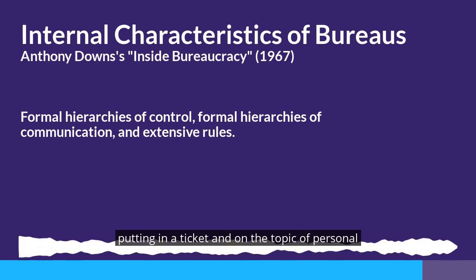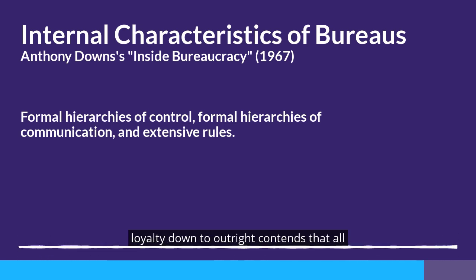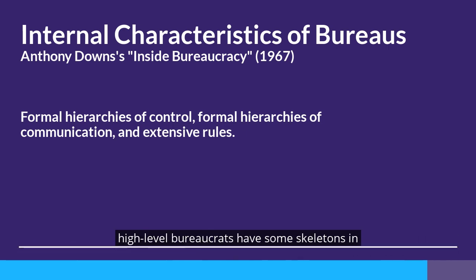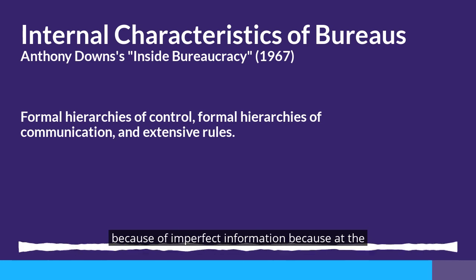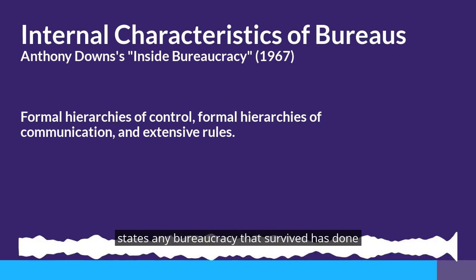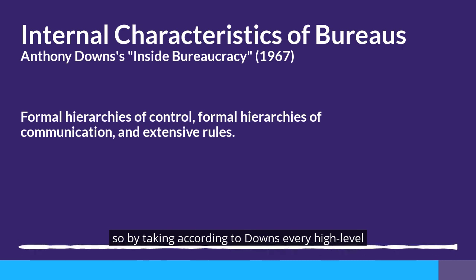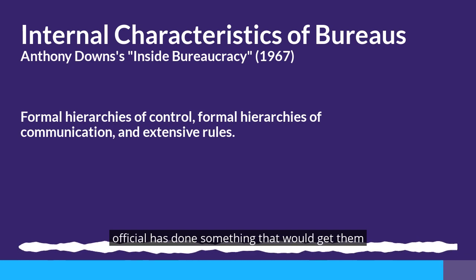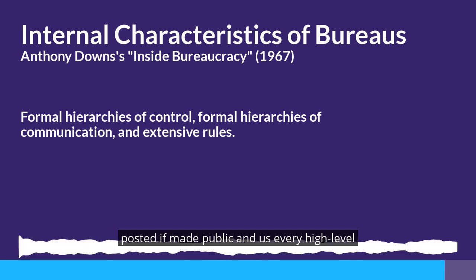On the topic of personal loyalty, Downs outright contends that all high-level bureaucrats have some skeletons in the closet — because of imperfect control of subordinates, because of imperfect information, and because, as he states, any bureaucracy that survives has done so by taking shortcuts to increase efficiency or effectiveness. According to Downs, every high-level official has done something that would get them ousted if made public.